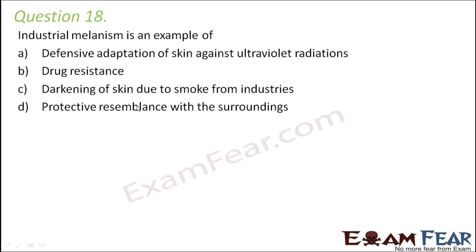So what do we mean by industrial melanism? Industrial melanism was the prevalence of dark colored varieties of animals in industrial areas. Normally in industrial areas, the environment was mostly black in color because of the smoke emitted from the industries, so the background was generally blackened. As a result, it was observed that gradually the organisms in those areas tended to have variations which made them darker in color, with increased amounts of melanin pigment.